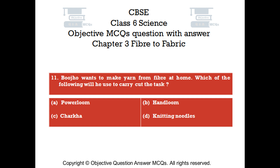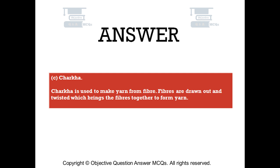Question number 11. Boeho wants to make yarn from fiber at home. Which of the following will he use to carry out the task? Option A: power loom. Option B: hand loom. Option C: charka. Option D: knitting needles. The right answer is option C — charka. Charka is used to make yarn from fiber. Fibers are drawn out and twisted, which brings the fibers together to form yarn.